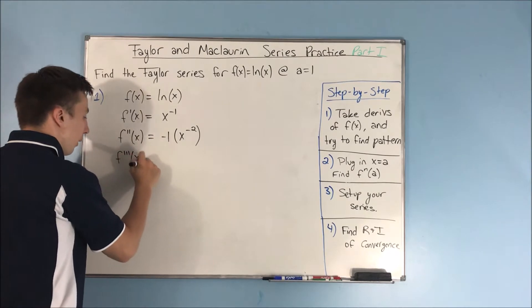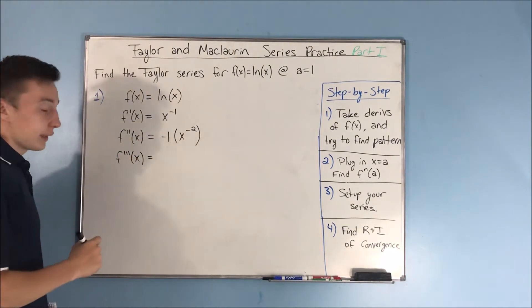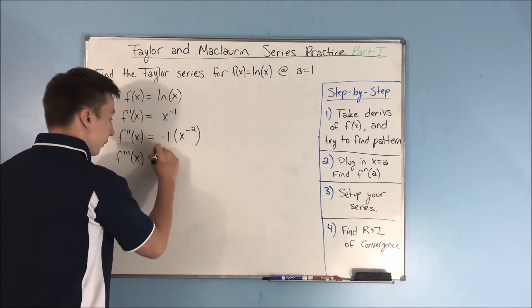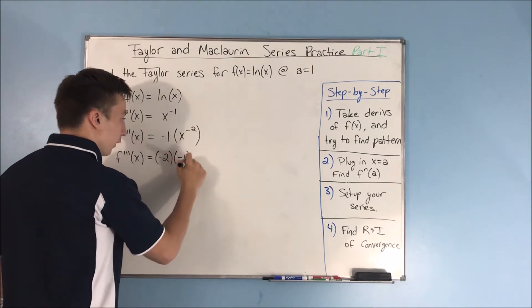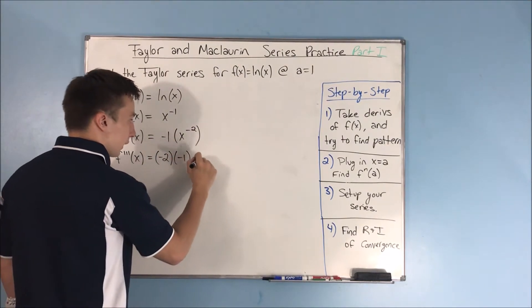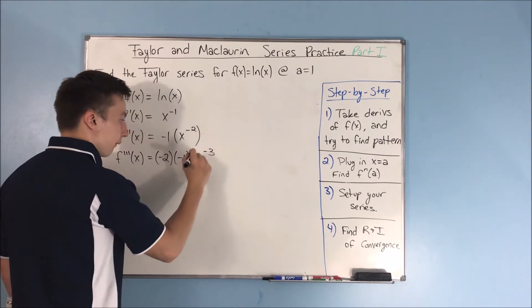What about f triple prime of x? We have a negative 2 times negative 1, and this will be times x to the negative 3.